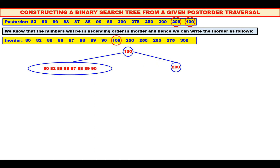Mark 200 in inorder. For 200, there are no left elements — only right elements. All the four of them are to the right. Therefore, mark them to the right. Now, among 250, 260, 275, 300, which is the root? See the post-order — it is 300. Therefore, mark 300 as the root and also mark 300 in the inorder.